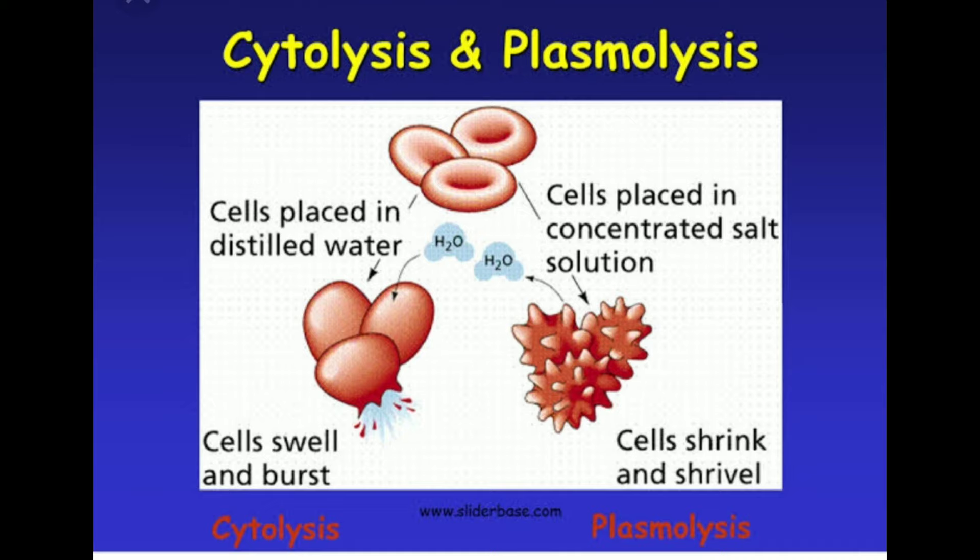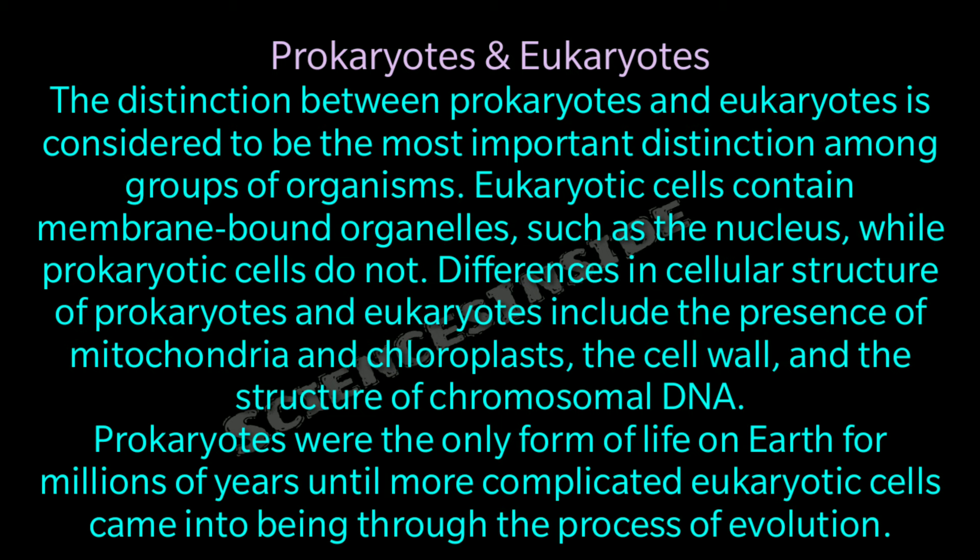The distinction between prokaryotes and eukaryotes is considered the most important distinction among groups of organisms. Eukaryotic cells contain membrane-bound organelles such as the nucleus, while prokaryotic cells do not. Differences include the presence of mitochondria and chloroplasts, cell wall composition, and the structure of chromosomal DNA. Prokaryotes were the only form of life on Earth for millions of years until more complex eukaryotic cells came into being through evolution.